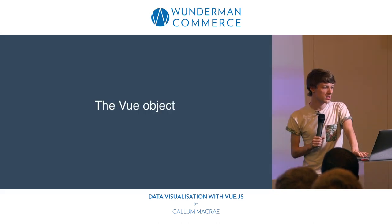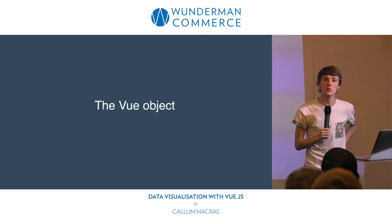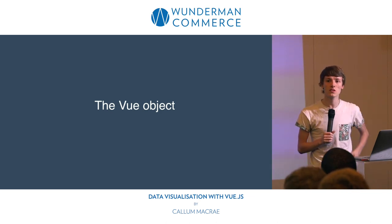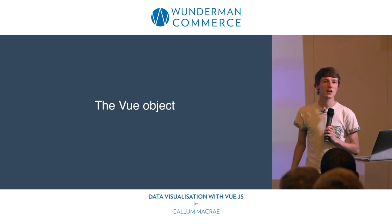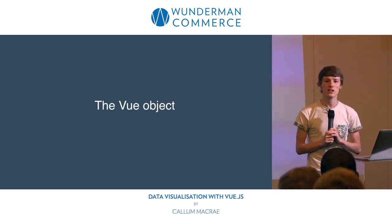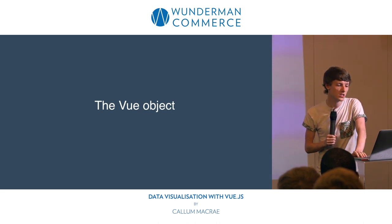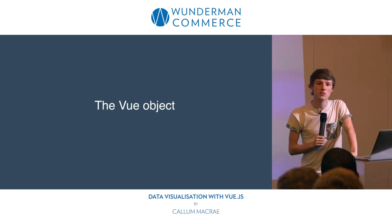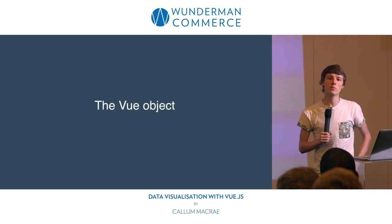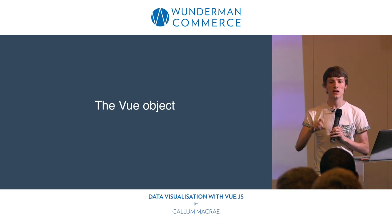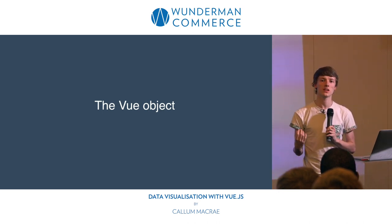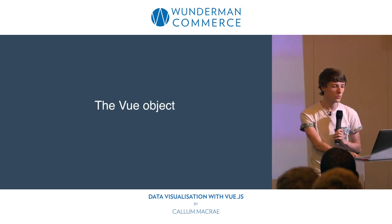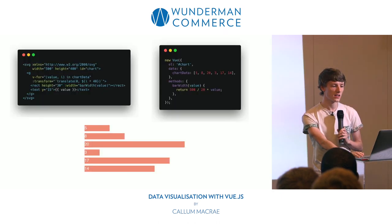Right now we've seen how you can get data from the object into the template, but if you do that for everything, your template won't be very nice. On the Vue object, what we've seen so far is the el property, which says what we want to work on, and the data property, which says what data we want to apply. Let's look at ways of adding some more stuff.